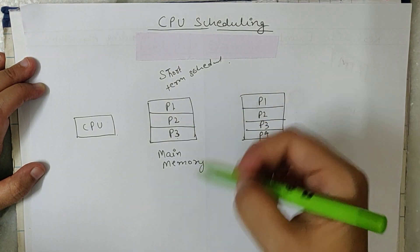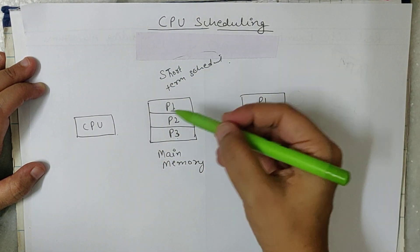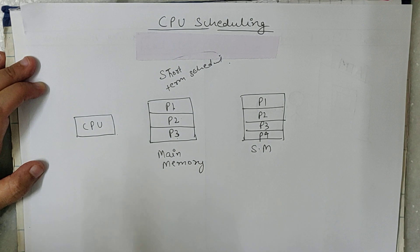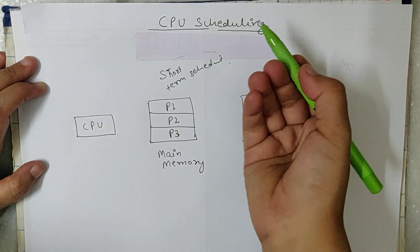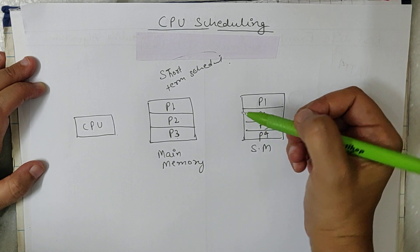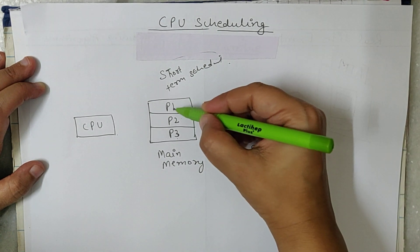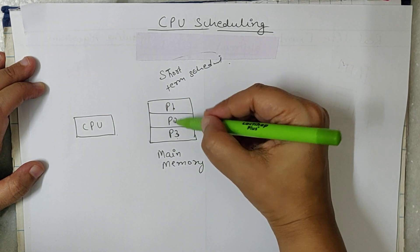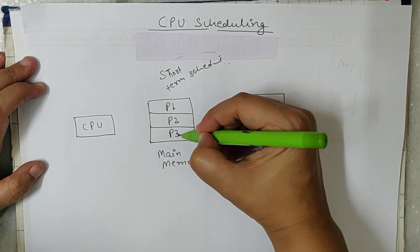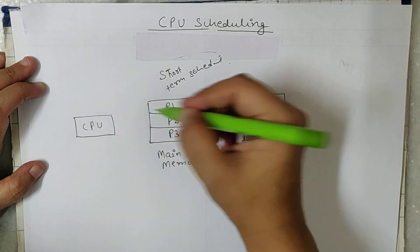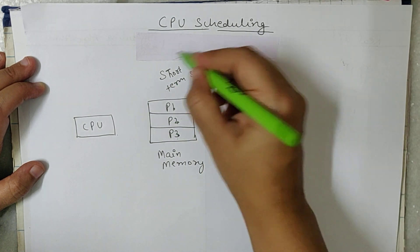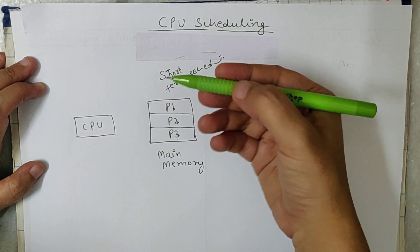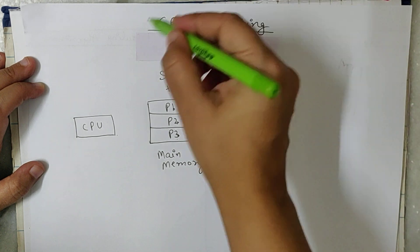So what criteria does the short-term scheduler use? Suppose I say that P1 will get the CPU first — how is that decided? On what basis does the short-term scheduler decide that P1 should get the CPU rather than P2 and P3? Who should get the CPU first and who should get it later? This is called CPU scheduling.